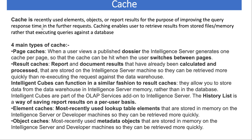The last one is called object cache. Object cache means as you know in MicroStrategy everything is an object - whether it is a schema object, application object, configuration object, anything. When you open the definition of any object, say for example you created a sales metric, the moment you open it - you double click or right click and edit - you will see how this object has been defined. That definition of that object which has been recently used is being stored into the object cache.